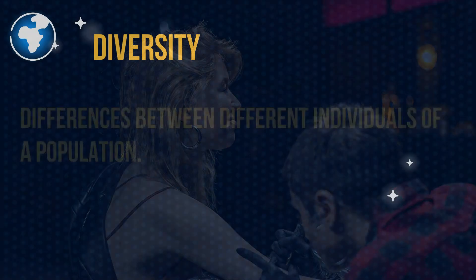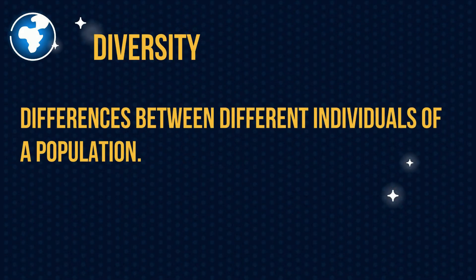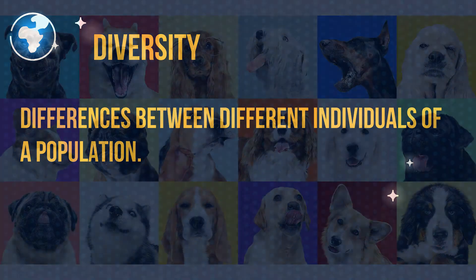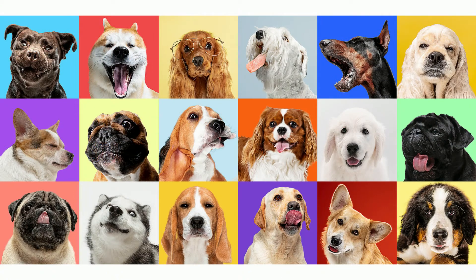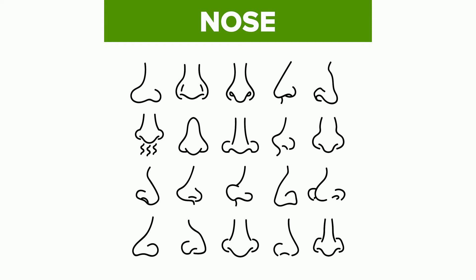Next, diversity: differences between different individuals of a population. I have two pictures. First, you can see the differences of the different dogs. And you can see the diversity and differences among the different types of gnosis.